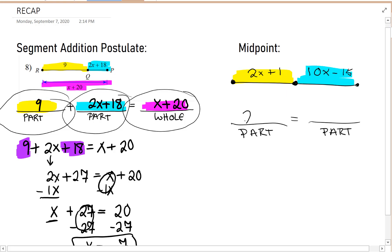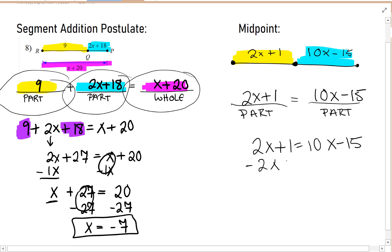2X plus 1 equals 10X minus 15. And that's the equation that we would solve. Let's go ahead and do that. I will subtract 2X to get the X's together. That is 0 plus 1 equals 10X minus 2X is 8X minus 15. Now I'm going to get that 15 to the other side by adding it. Inverse operations, 15 plus 1. That is 16 equals 8X. Divide both sides by 8. And X equals 2.